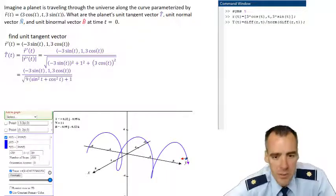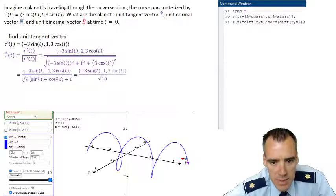Cranking through that, we get that's equal to the vector function negative 3 sine of T, 1, 3 cosine of T, all divided by the square root of 10.